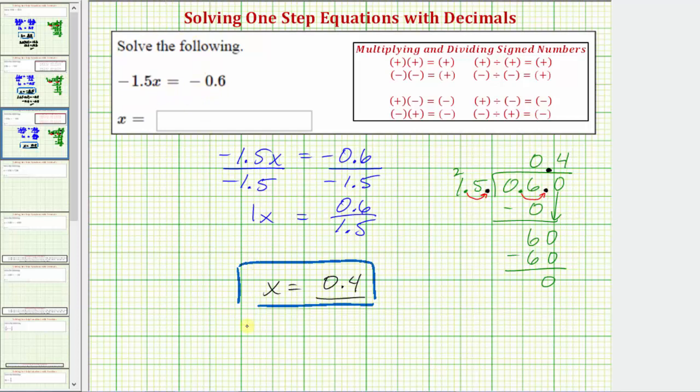Performing the substitution, we would have negative one point five times zero point four equals negative zero point six. Let's check this product on the calculator.